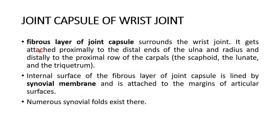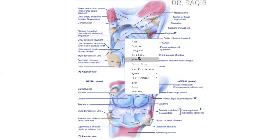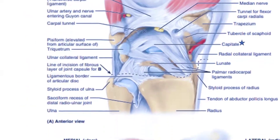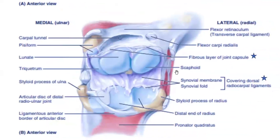The fibrous layer of the joint capsule surrounds the wrist joint. It gets attached proximally to the distal ends of the radius and distally to the proximal row of the carpals — the scaphoid, lunate, and triquetral. The internal surface of the fibrous layer of the joint capsule is lined by synovial membrane, attached to the margins of the articular surfaces. Numerous synovial folds exist there. This picture shows the fibrous layer of the joint capsule, the synovial membrane covering the dorsal radiocarpal ligaments, and the synovial folds.